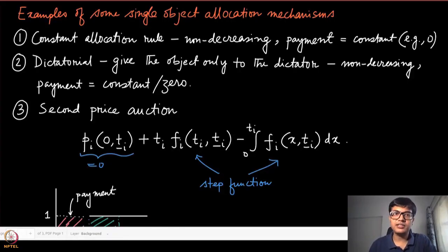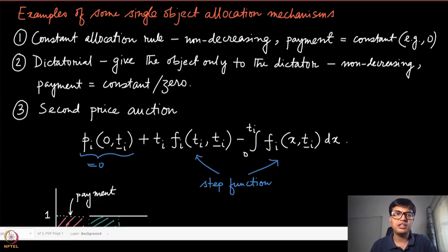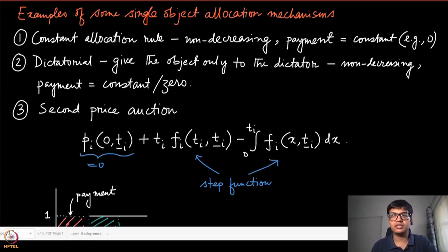We now know Myerson's characterization result and the type of mechanisms which are truthful in the single object allocation domain. Let us look at some examples of such mechanisms which are truthful and fall in this class. The first two examples are quite standard: constant allocation and dictatorial mechanisms. We know those are monotone allocations, but they are not super interesting because they are very trivial mechanisms.